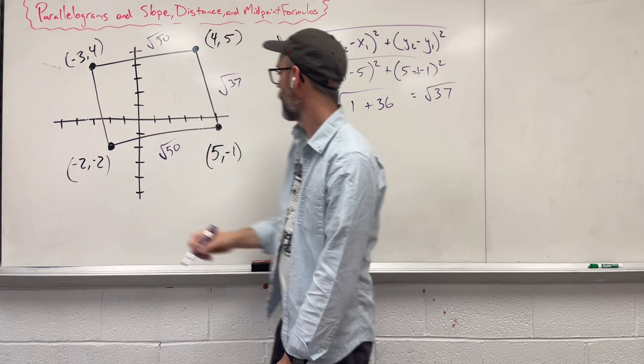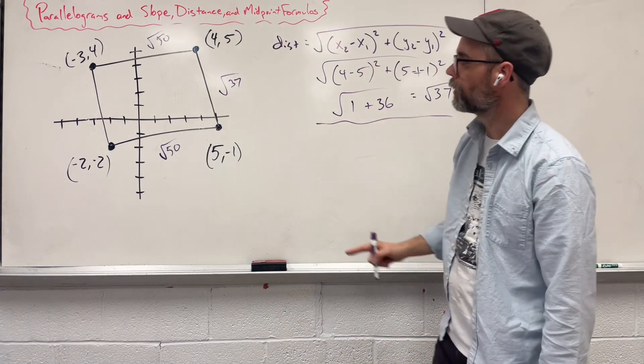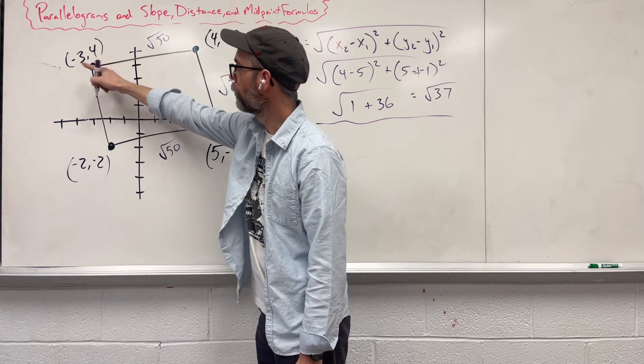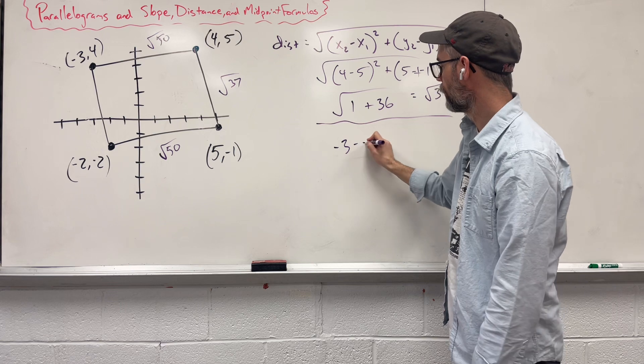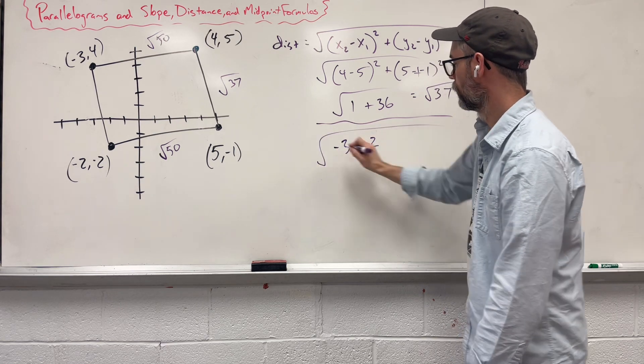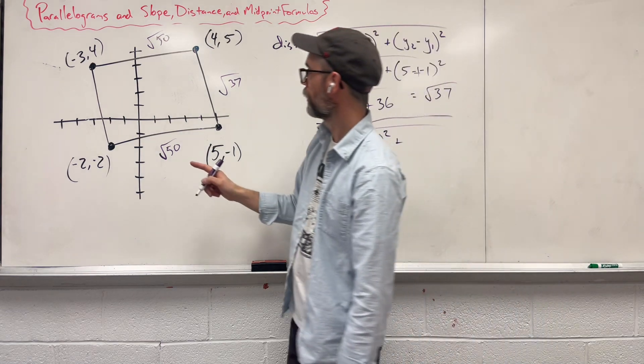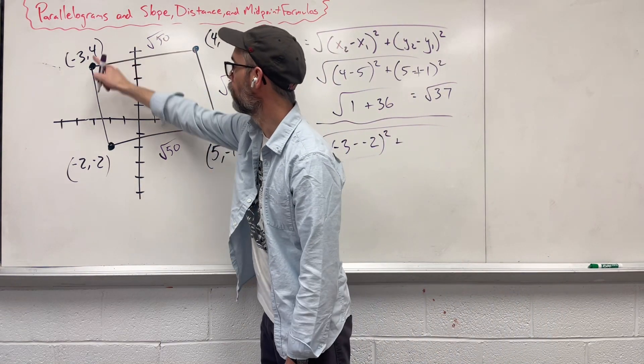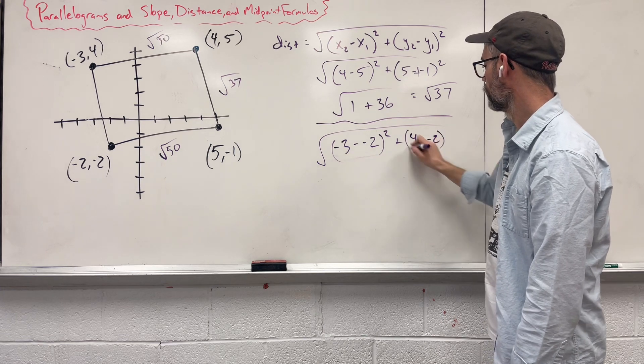Let's see if this side matches up. We're looking at our x's first, negative 3 minus negative 2, square it. Our y's now, we started with negative 3, we're going to say 4 minus negative 2, square it.